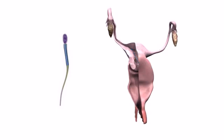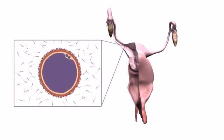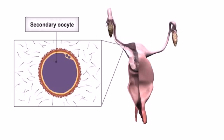This process usually takes between 30 minutes and two hours. Only around 200 spermatozoa will reach the secondary oocyte in the uterine tube, and of these, only one will fertilize it.